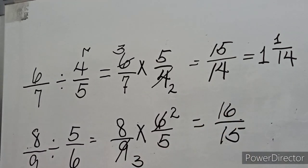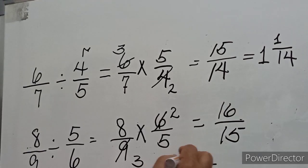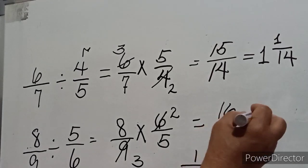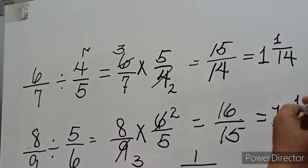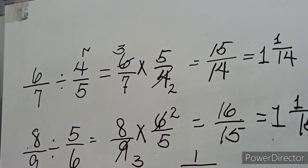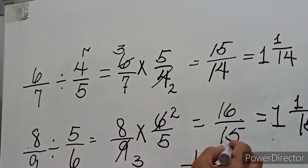We can see that sixteen is larger than fifteen, so we have an improper fraction. Dividing sixteen by fifteen gives one with a remainder of one. The remainder becomes the numerator and the divisor remains the denominator, so our answer is one and one over fifteen. This is an example of a mixed fraction, while sixteen over fifteen is what we call an improper fraction.